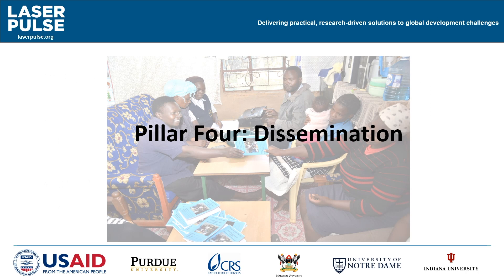Developing an effective translation product is invaluable for application and use of research. However, to move beyond a single target application, use, or audience, it is important to consider the channels, platforms, and networks that can help disseminate research outcomes and translation products for wider replication and scale. Dissemination is targeted communication with specific audiences for the purpose of continuing the uptake of results and usage of products, and it facilitates wider application by increasing awareness and opening opportunities for replication and scale.